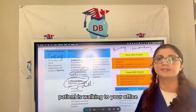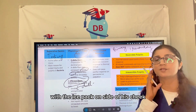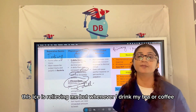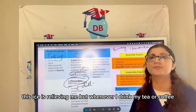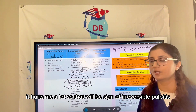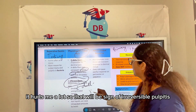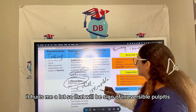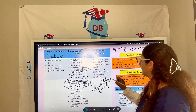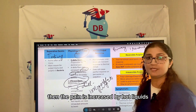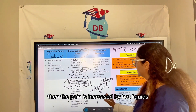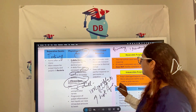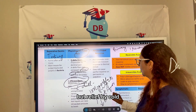C fibers are stimulated by hot liquids and relieved by cold. For example, a patient walking into your office with an ice pack on the side of his cheek, saying the ice is relieving him but drinking tea or coffee hurts a lot — that is a sign of irreversible pulpitis, when pain is increased by hot liquids but relieved by cold.